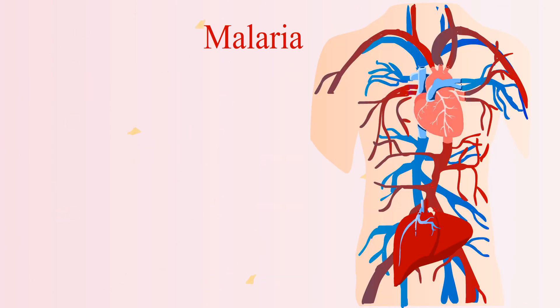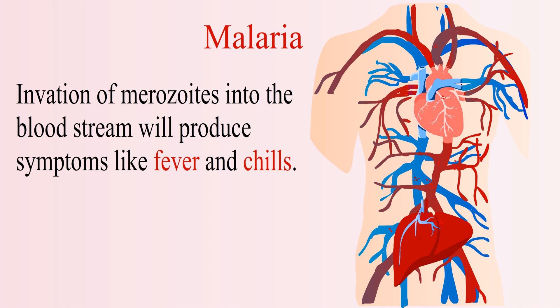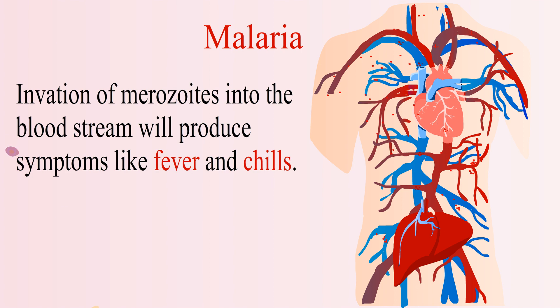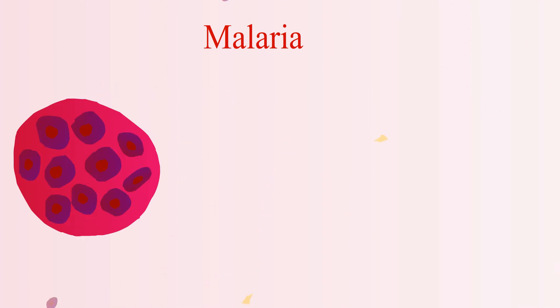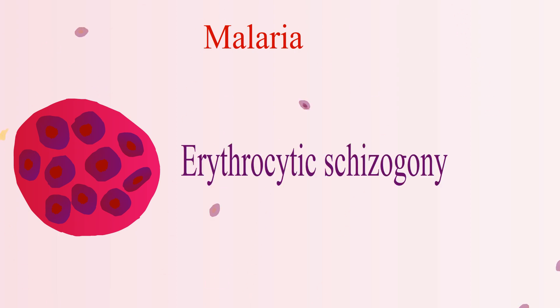Merozoites will invade the bloodstream and will create symptoms like fever and chills. The merozoites will infect the red blood cells and will undergo asexual multiplication on the red blood cells of the patient. This stage is known as erythrocytic stage.